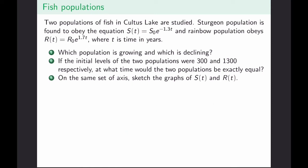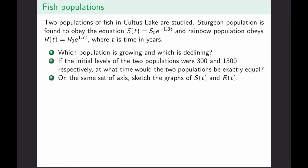For the sturgeon, the model has S-naught as the initial population, and the constant of growth in the exponent is negative, indicating a decline. For rainbow trout, R-naught is the initial population, but the constant in the exponent is positive, indicating growth. To determine whether a population is growing or declining, simply look at the sign of the constant of growth or decay. S(t) is declining because its constant is negative; rainbow trout is growing because its constant is positive.